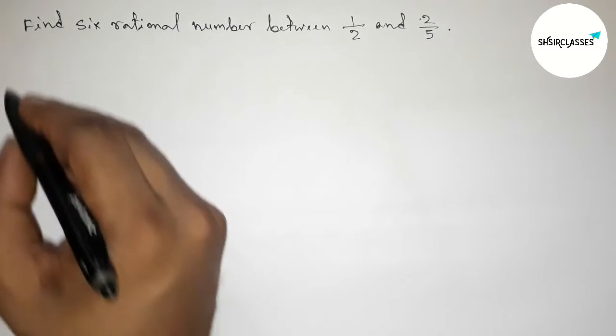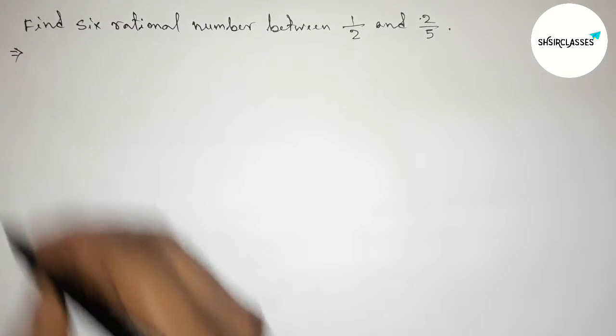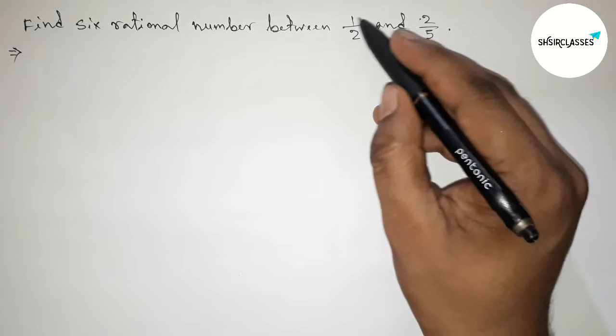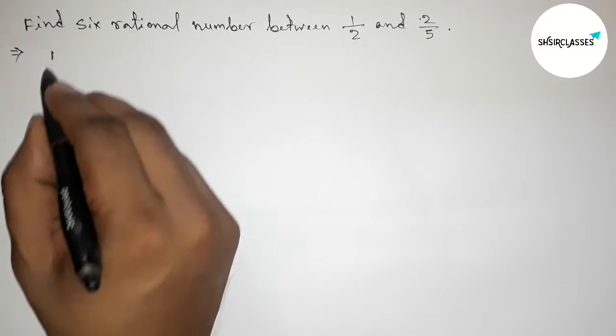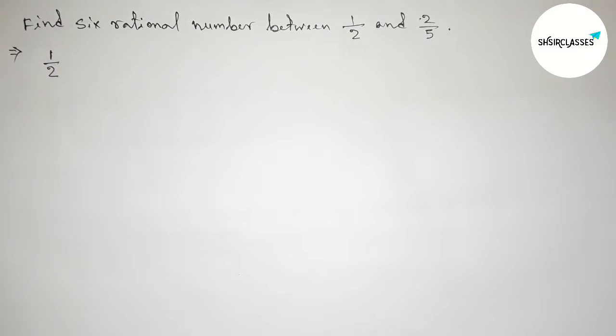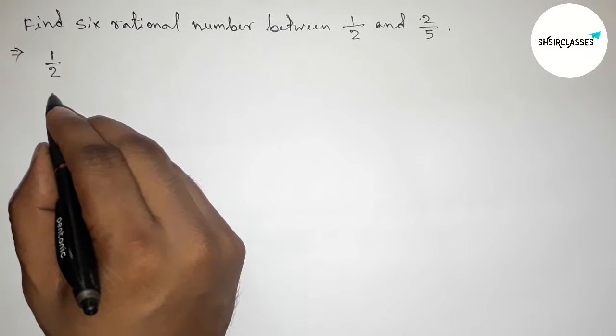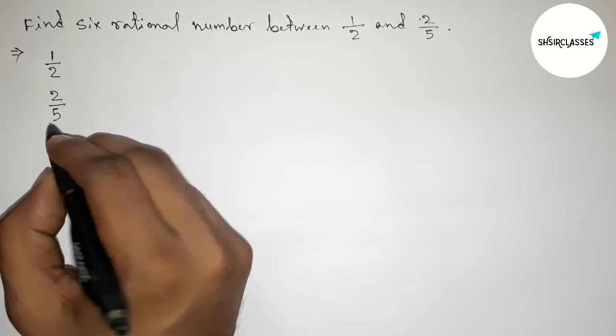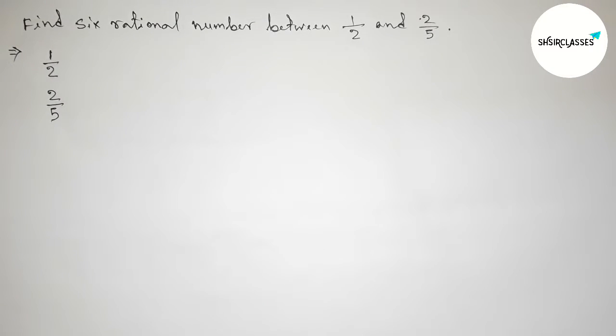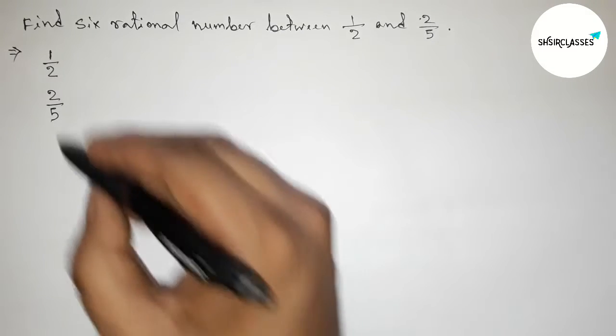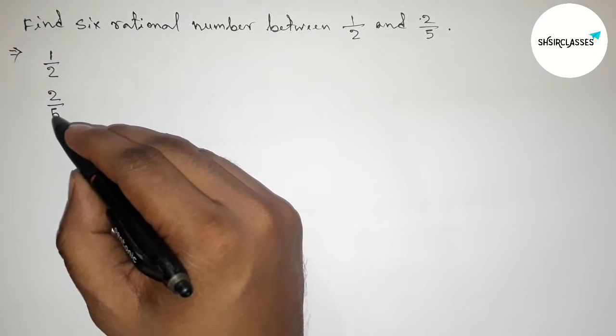First of all, let us solve this problem. The first rational number given is 1/2 and the second one is 2/5. Here both the denominators are not the same, so we have to make equal denominators.